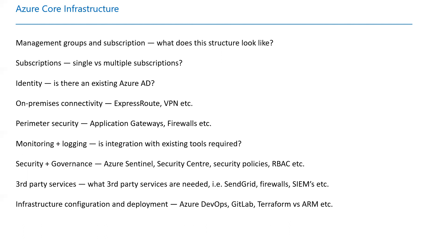What kind of logging system are you using? Are you integrating with any existing tools? What kind of security and governance rules are in place — like Azure Sentinel, Security Center, Azure Advisor — and how are you setting up your RBAC policies? These will all be discussed in the security and governance section. For third-party services, in my case I'm using SendGrid for sending emails. For infrastructure configuration and deployments, I'm using Azure DevOps with ARM templates.